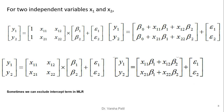For two independent variables x₁ and x₂, the matrix representation is shown here. Sometimes in multiple linear regression we can exclude the intercept term. When we exclude the intercept term, the column of ones is removed, giving the resultant format of the matrix.